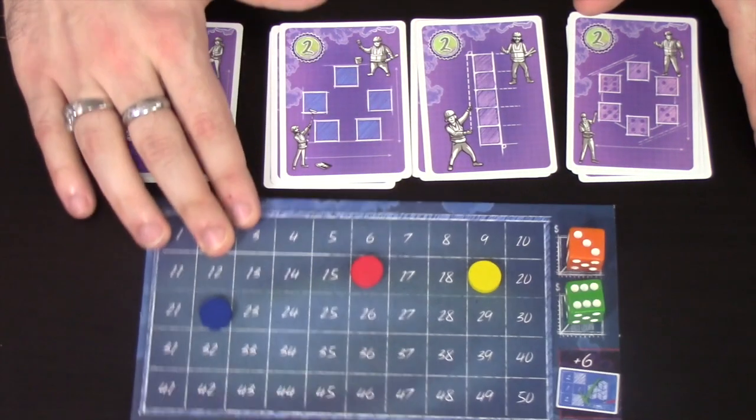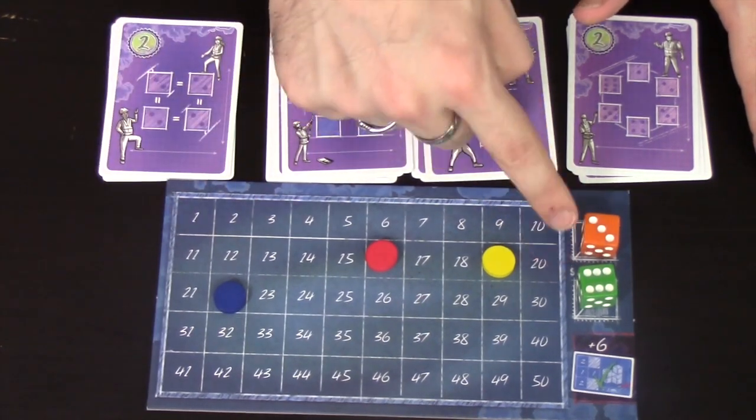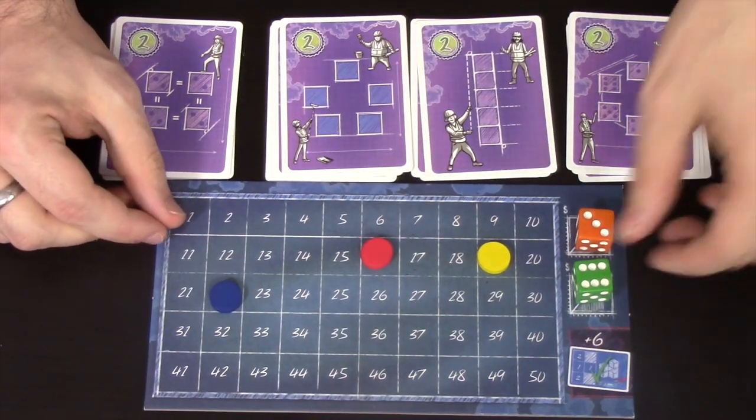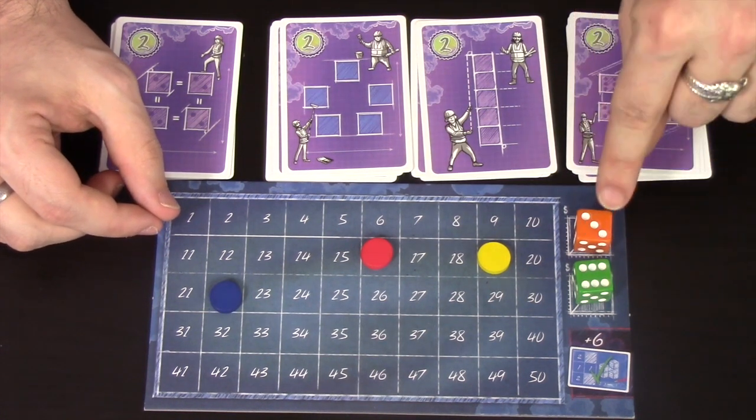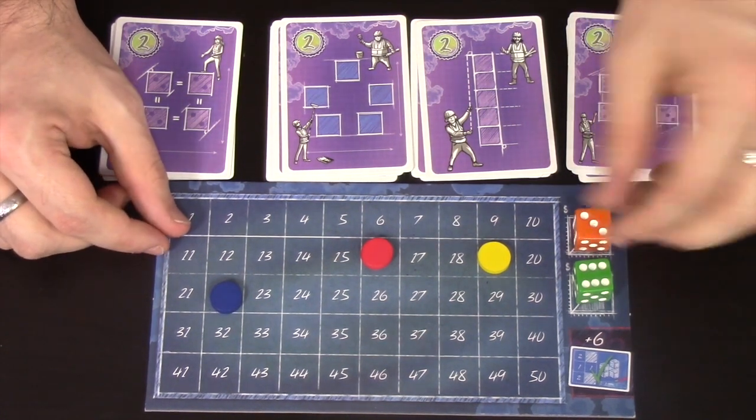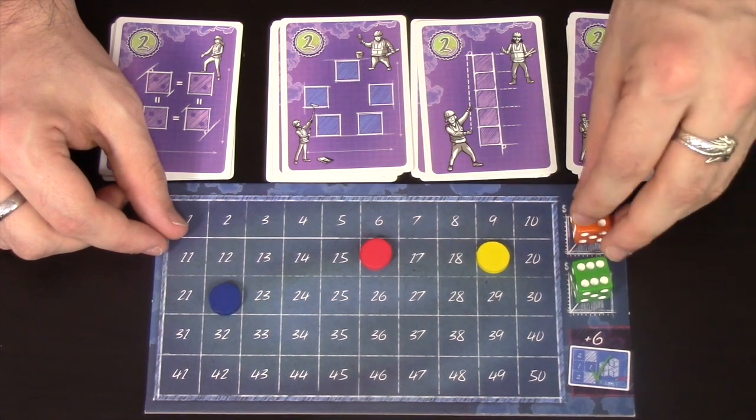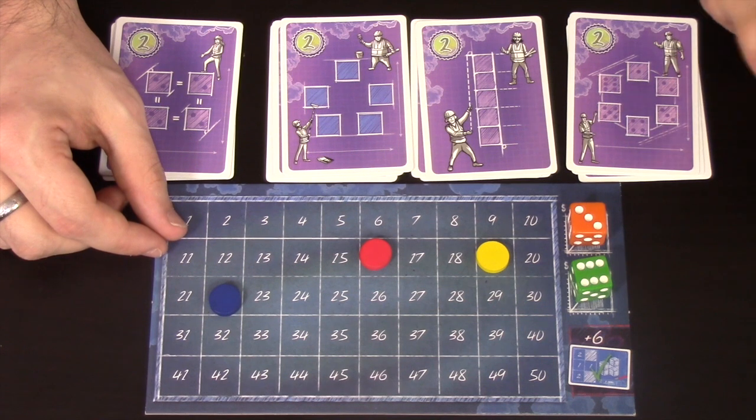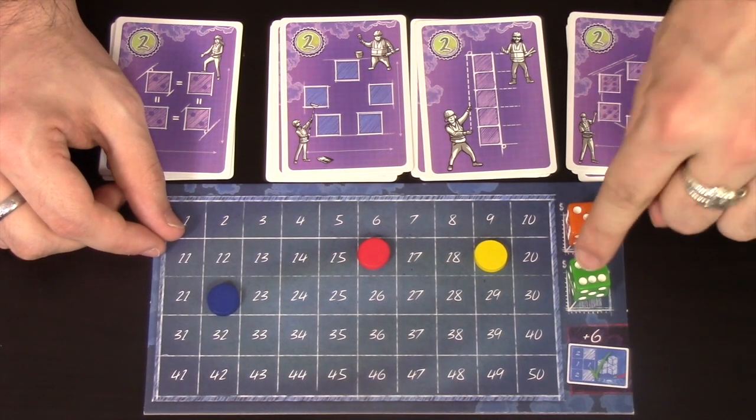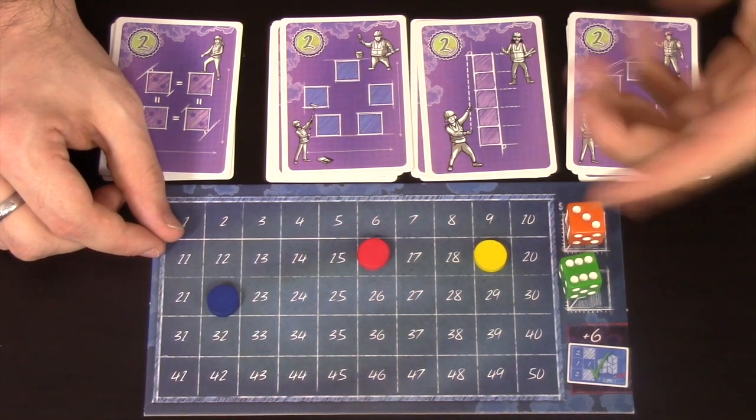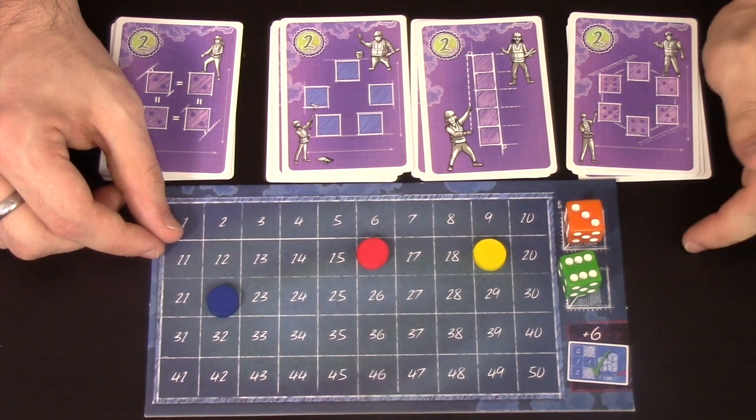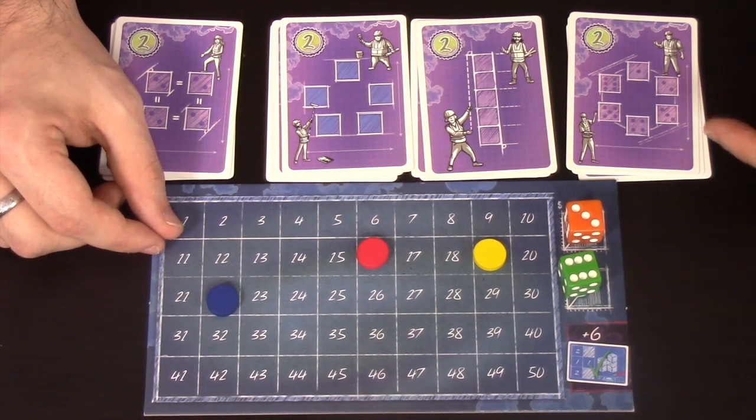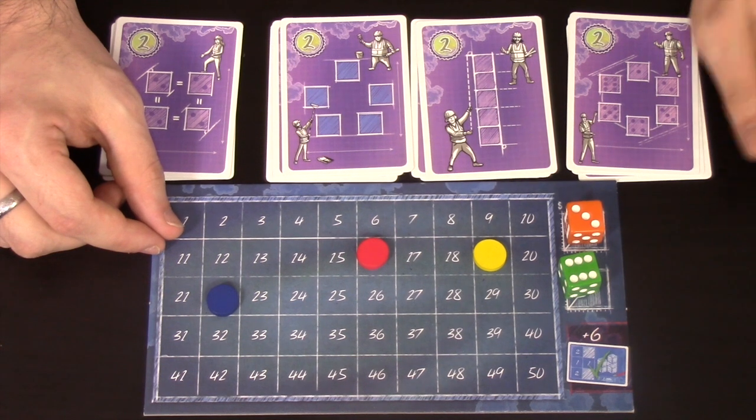The tiebreaker works as follows. You can see here, there's spaces for two dice here. What would happen here, at the start of the game, you would put two dice at random here, they have to be different colours, and if there's a tie, whoever's got the most orange dice would break the tie in their favour, and if that's a tie, whoever's got the most green dice would break the tie in that favour. If that's a tie, whoever went last gets to win the tie.